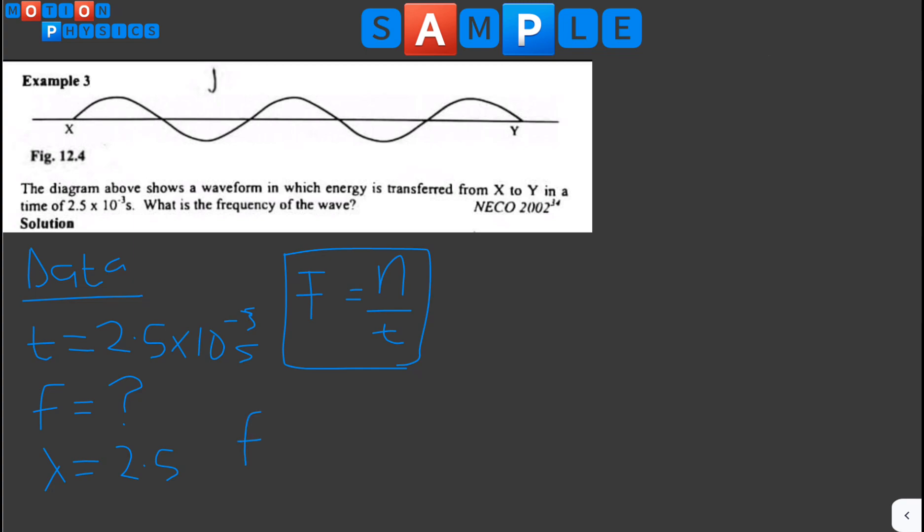So our frequency is: the number of wavelengths is 2.5, right? 2.5 over the time, which is 2.5 times 10 raised to the power of minus 3.